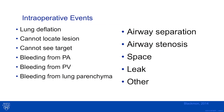There are many different intraoperative events that can happen during surgery. These can include deflation of the lung, inability to locate a lesion, inability to see the target, bleeding from the pulmonary artery, pulmonary vein, or lung parenchyma, airway separation or stenosis, space problems with poor re-expansion of the lung, and leak from the airway or bleeding or other.